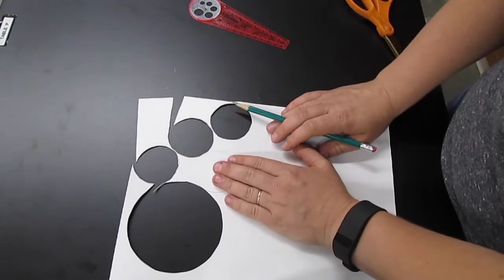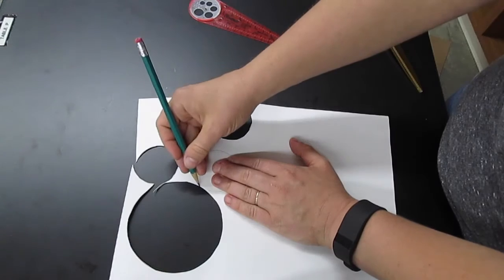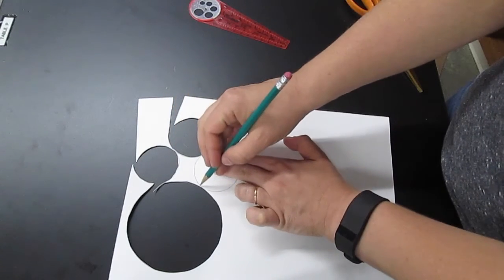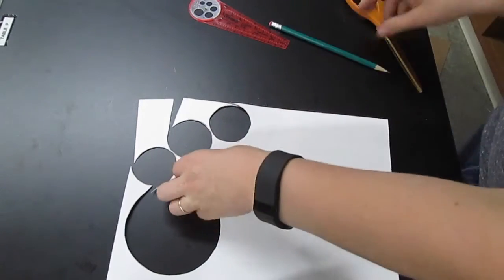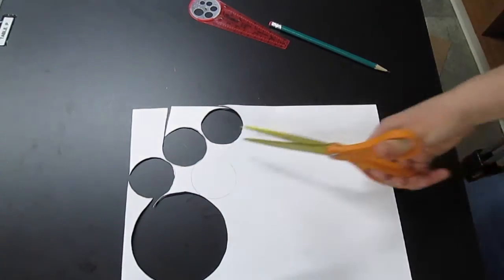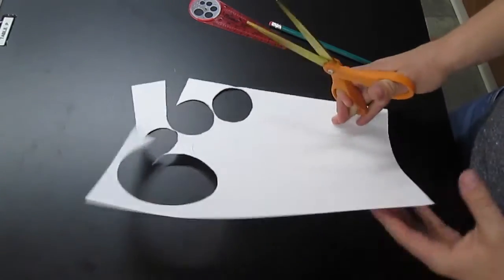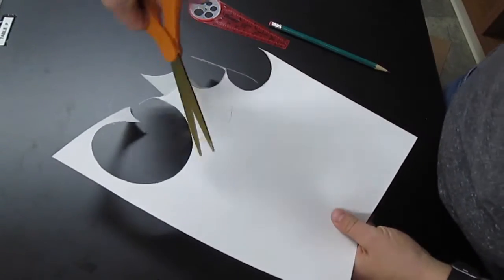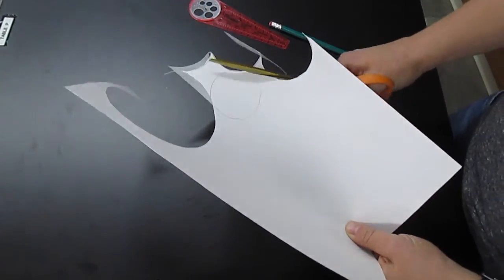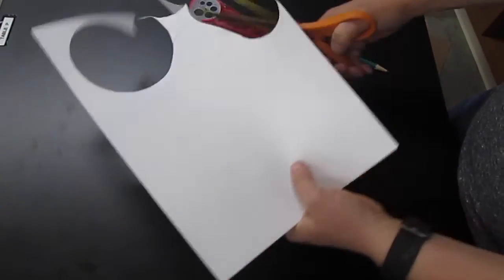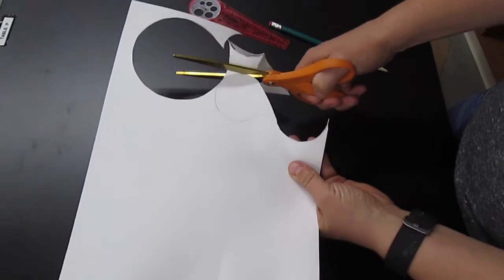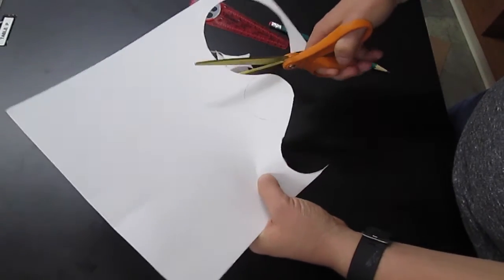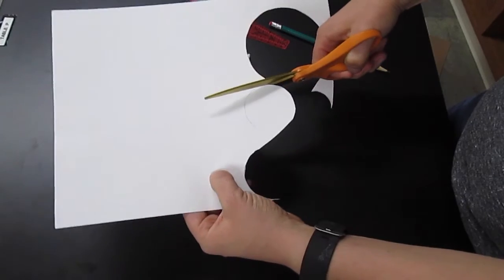Once you get one, you can trace it. So notice I'm getting it right close to the edges. So I'm trying to be as resourceful as possible. Then a big mistake that students make when they cut is they start turning their hand rather than turning the paper. So you want to make sure that as you cut, it's your paper that you spin, not the scissors.